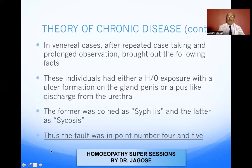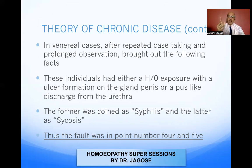In venereal cases, after repeated case-taking and prolonged observation, he brought out the following facts. The venereal cases constituted only a minuscule portion — only one-eighth of chronic diseases were venereal in nature, and seven-eighths were non-venereal. In venereal cases, he found a history of exposure with ulcer formation on the glans penis, or a pus-like discharge from the urethra. The former — ulcer formation of the glans penis — he coined the word syphilis, and the latter — pus-like discharge from the urethra — he named sycosis. Thus, the fault was found in point number four and five combined: defect in ascertaining the totality of symptoms, and the existence of some obstacle whose persistence and non-eradication maintained the disease.